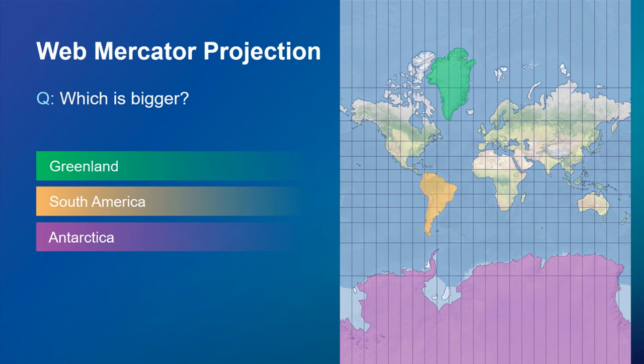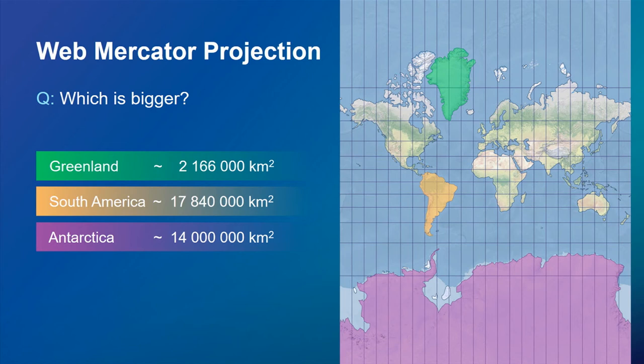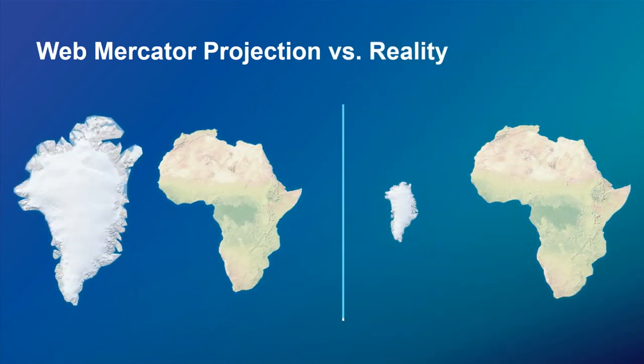Let's look at a concrete example. Pretty much every web service uses Web Mercator. Between Greenland, South America, and Antarctica — which looks biggest in Web Mercator? Antarctica appears largest. But looking at actual areas, Antarctica is the second largest, South America is the largest, and Greenland — which looks even bigger than South America in Web Mercator — is actually by far the smallest. If you map Greenland against Africa, which is 14 times bigger, it's nowhere near correct in Web Mercator.